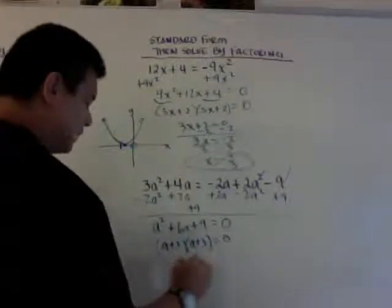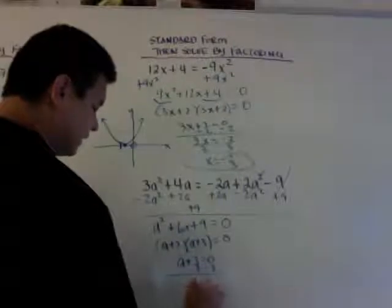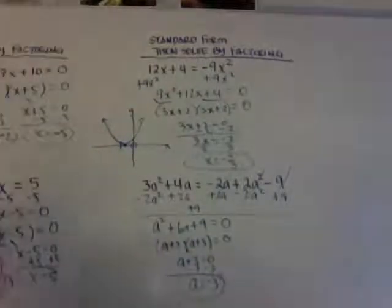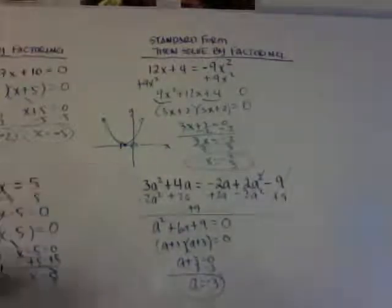So a + 3 = 0, minus 3, a is equal to negative 3. So they might use a different variable on you. And you just solve for whatever variable they give.